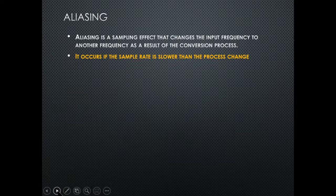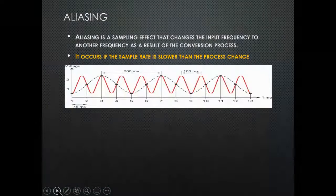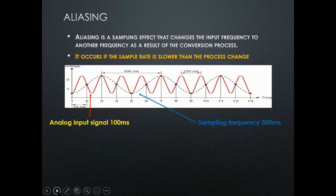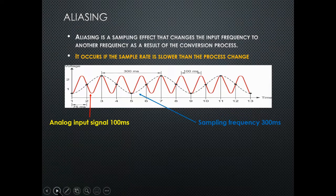To avoid aliasing, you need your scan time at least twice the rate of the incoming signal — two times the sample rate. For example, with an analog input signal shown in red going up and down, if the sample frequency is 300 milliseconds you can see how many signal pulses you're missing. The sample frequency is shown as a dotted line — that's how fast you're scanning the transmitter.